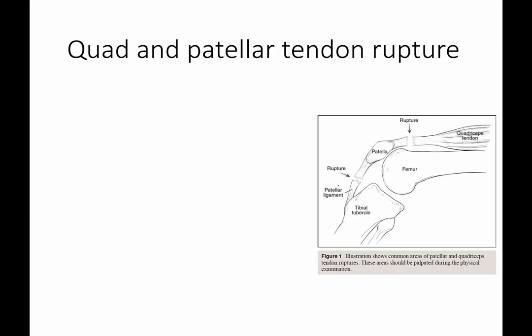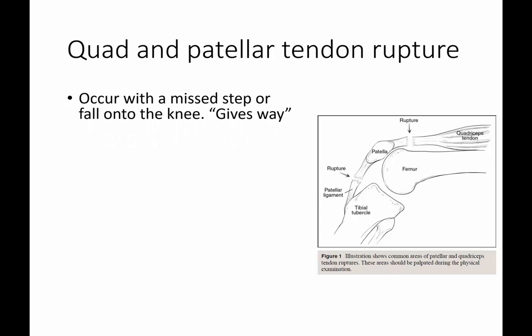Contrasted to that is quadriceps and patellar tendon rupture. Many people refer to the infrapatellar structure as the patellar ligament, since it connects bone to bone, though both terms are used interchangeably — the patella is considered a sesamoid bone within the quadriceps. This is a much worse problem than patellar tendonitis and frequently occurs with a missed step or a fall onto the knee. Patellar fractures often exhibit similar clinical signs and symptoms as a patellar or quadriceps tendon rupture.